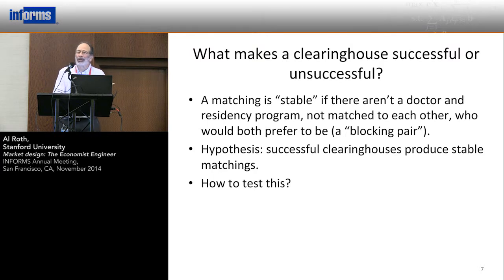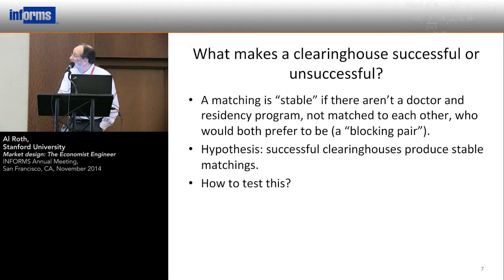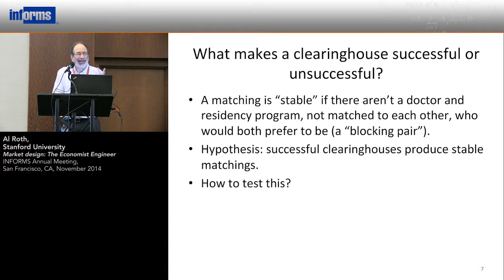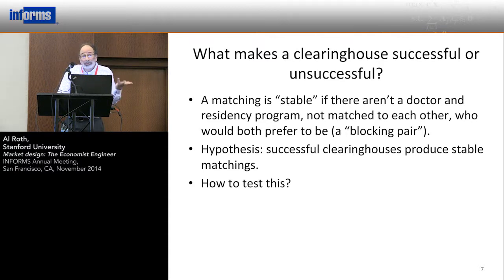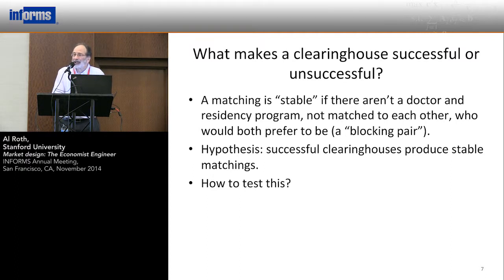A hypothesis, stated simply: a matching is stable if there aren't any doctors and residency programs who aren't matched to each other but who would prefer to be. Since this is ultimately a voluntary program, if there are doctors and hospitals not matched to each other who prefer to be, these are the people who aren't going to show up where they're supposed to. The hypothesis, therefore, is that clearinghouses that are successful are those that produce stable matchings, and those that produce unstable matchings will have more trouble being successful.